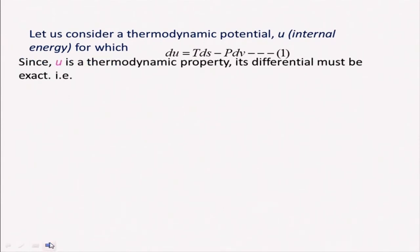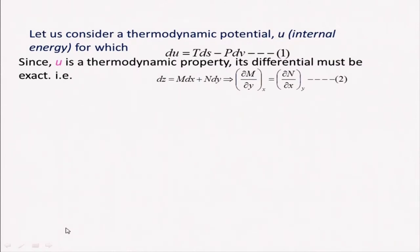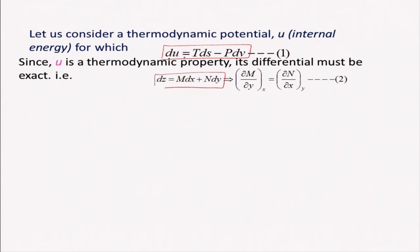U is a thermodynamic property and hence its differential must be exact. For that we use the condition ∂M/∂y|x = ∂N/∂x|y when the form is dZ = M dx + N dy. In this equation, M equals T and N equals −P.